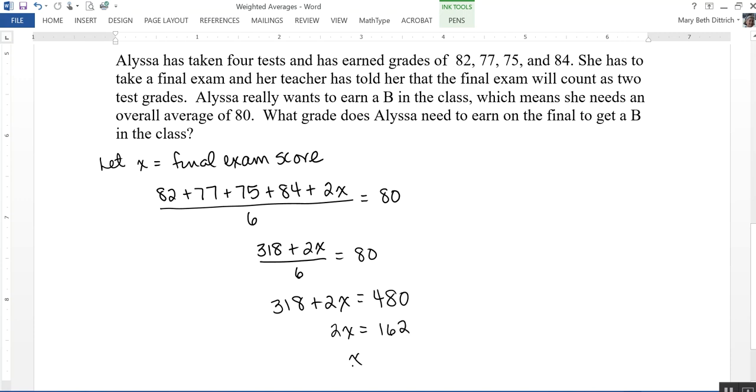And dividing by 2, x is equal to 81. So Alyssa needs to earn at least an 81% on the final exam in order to earn at least a B in the class.